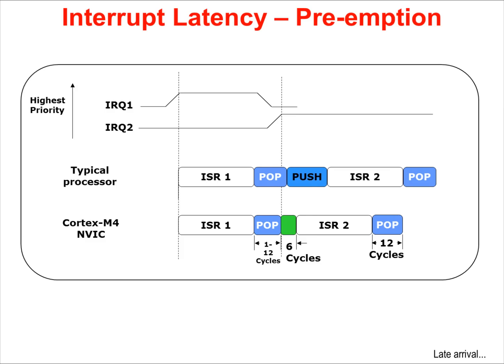The next NVIC feature is called preemption. The NVIC allows preemption of the pop or push process. In the diagram, a second interrupt was detected while the interrupt controller was restoring the processor state from the first. A typical processor is unable to do anything about this — it continues its pop process, then pushes the state for the second interrupt, resulting in many CPU cycles being wasted. On the Cortex-M4 NVIC, the second interrupt will preempt the pop process and trigger a tail-chaining event, again decreasing interrupt latency.